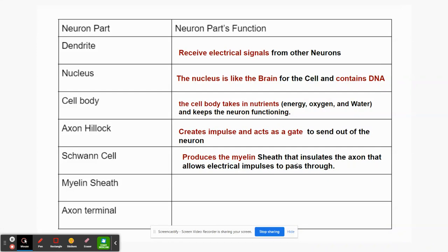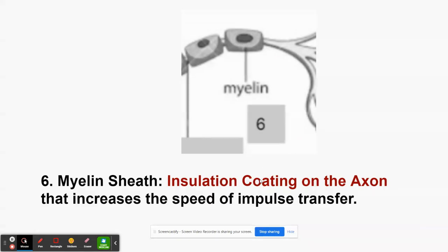The myelin sheath is the insulation coating on the axon that increases the speed of impulse transfer. When the Schwann cell produces more myelin, it coats the wire going through the neuron and allows the impulse to travel faster. So the myelin sheath produces myelin — the sheath that insulates the axon and allows electrical impulses to pass through.